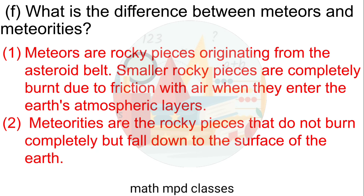F. What is the difference between meteors and meteorites? Meteors are rocky pieces originating from the asteroid belt. Smaller rocky pieces are completely burnt due to friction with air when they enter the Earth's atmospheric layer. Meteorites are rocky pieces that do not burn completely but fall down to the surface of the Earth.